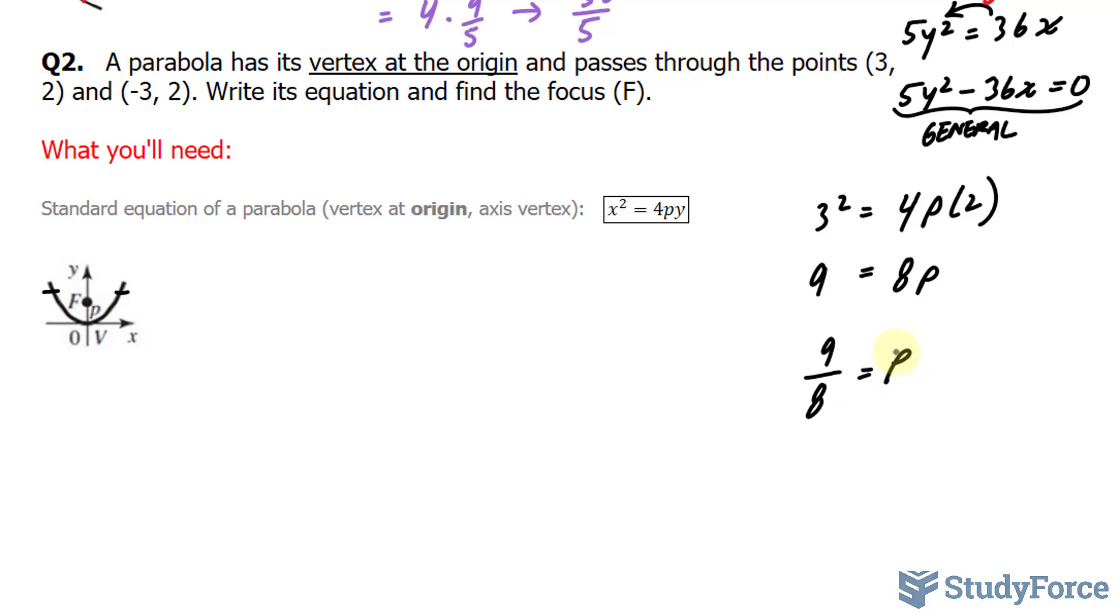They're not asking for the focal width here, so let's not mention that as part of our solution. The next thing that we need is the focus, and the focus here will be this point. Our p-value will be the y-coordinate and 0 will be our x-coordinate, so this is our focus.